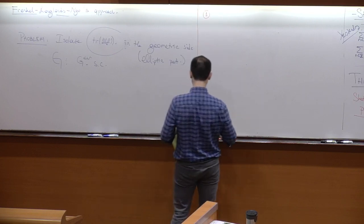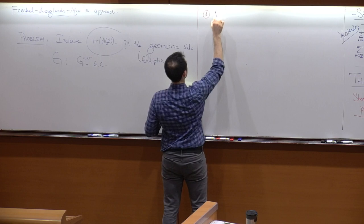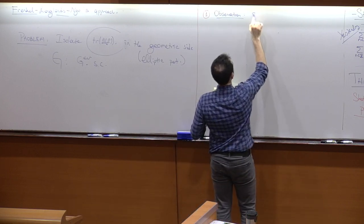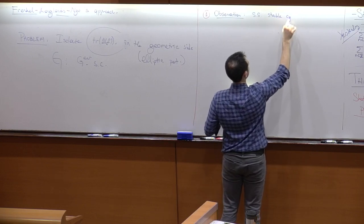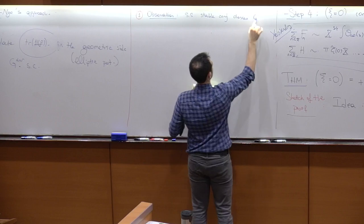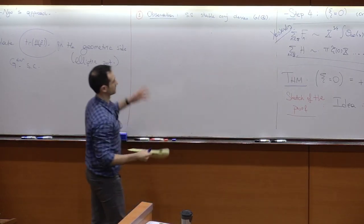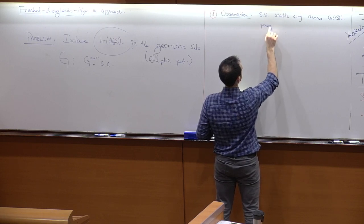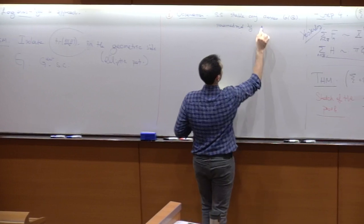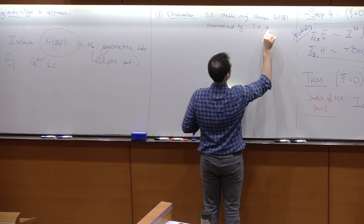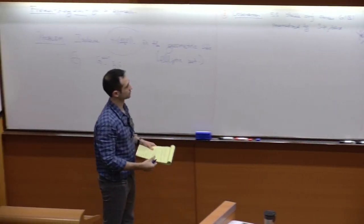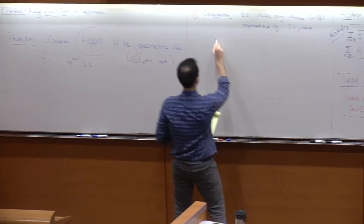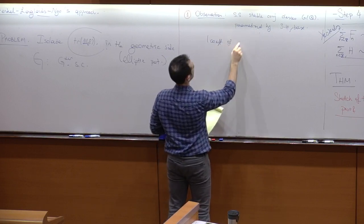The first observation is the elliptic part of the stable trace formula. The observation is that semi-simple stable conjugacy classes in G(Q) are parametrized by what they call the Steinberg-Hitchin base. This is what Julia introduced before in the lectures — it is just the space of characteristic polynomials. Think about it as the coefficients of the characteristic polynomial.